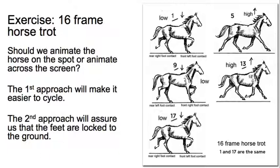The next question we have to ask ourselves is: do we want to animate the horse trotting on the spot, or do we want to animate it trotting across the screen? If we animate the horse trotting on the spot, it would make it easier to cycle it later on. But the second approach, animating it trotting across the screen, helps us lock the feet down to the ground.